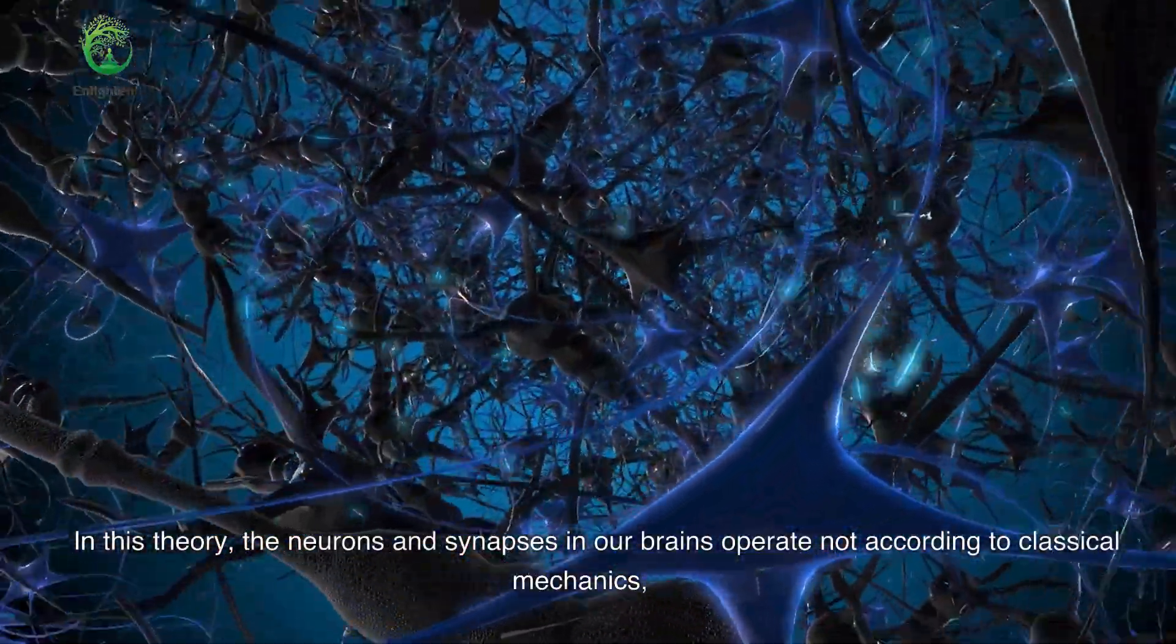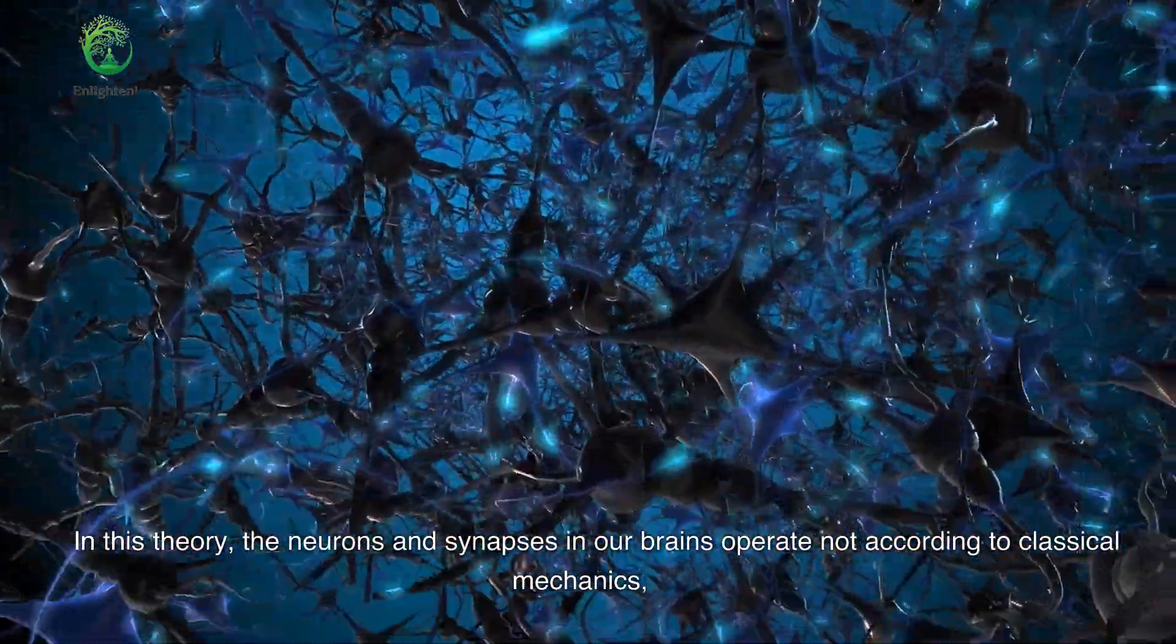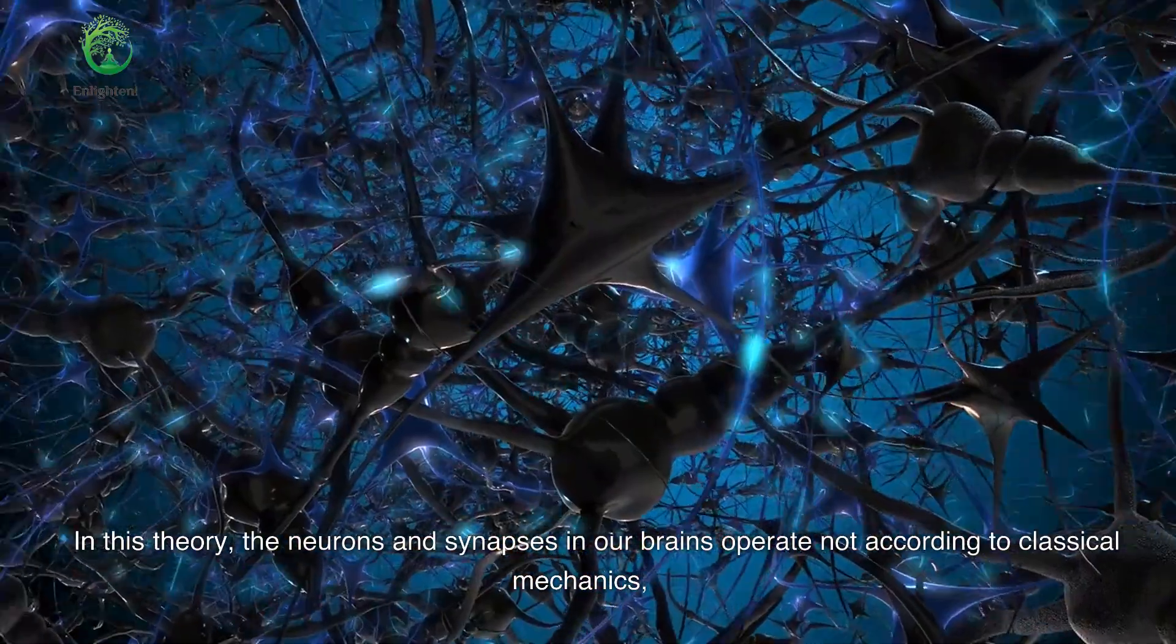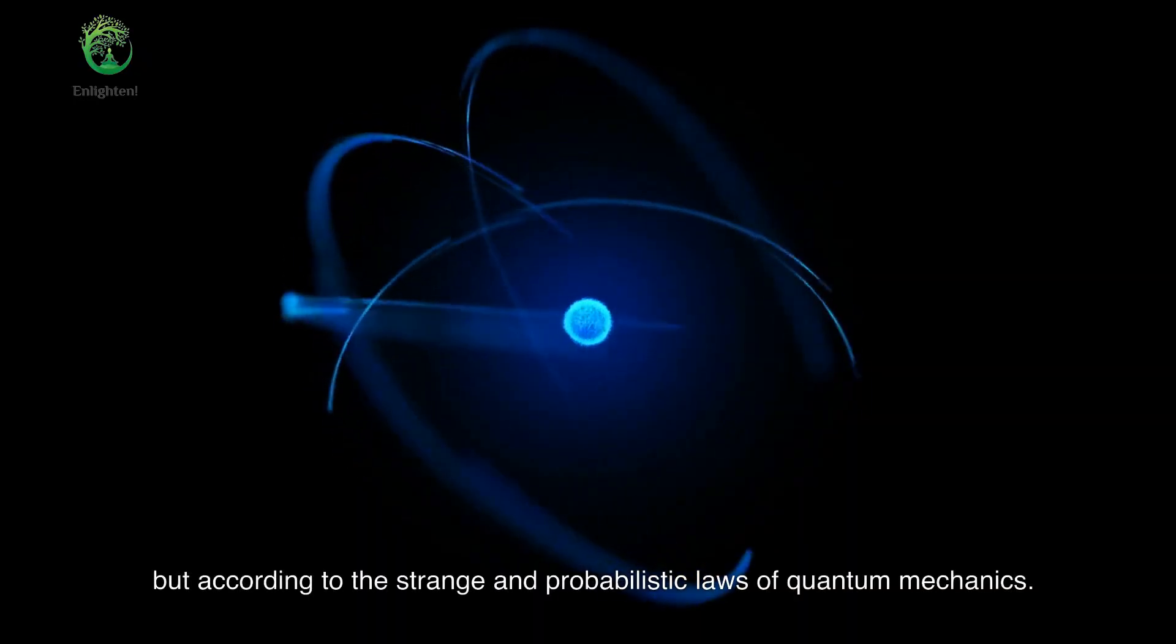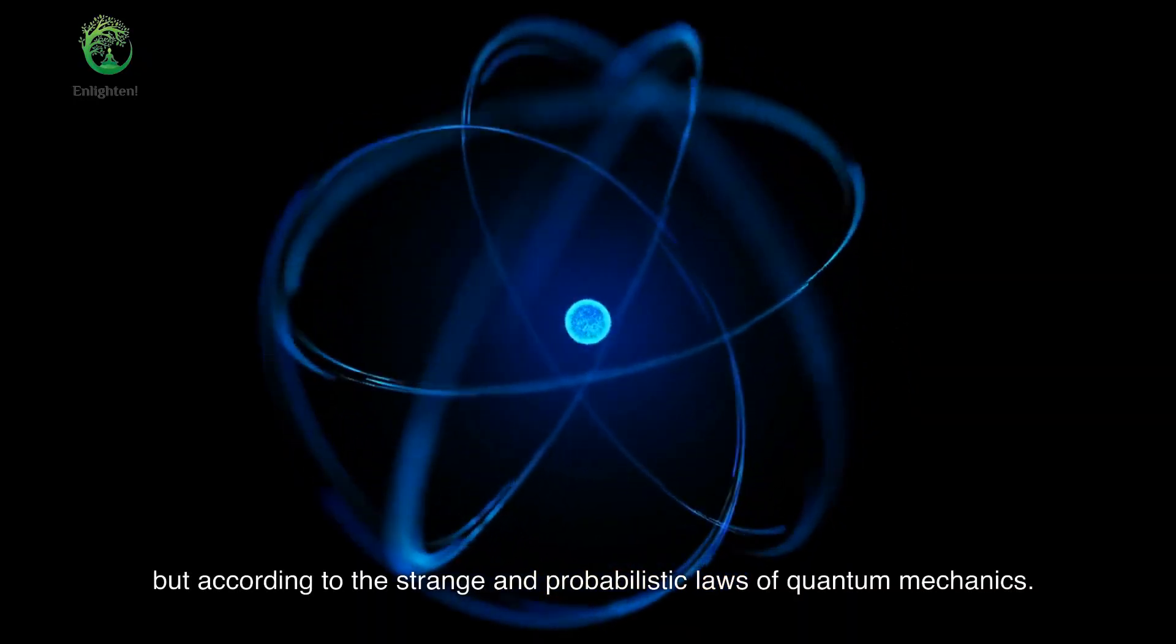In this theory, the neurons and synapses in our brains operate not according to classical mechanics, but according to the strange and probabilistic laws of quantum mechanics.